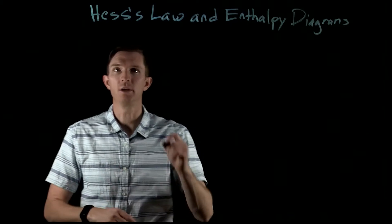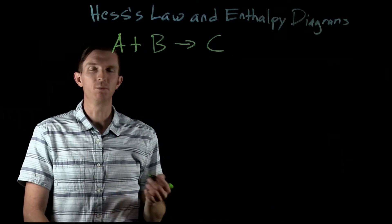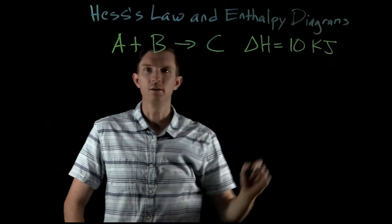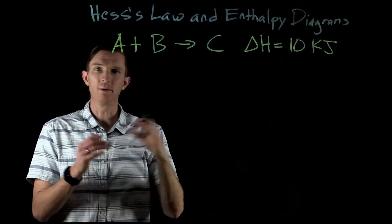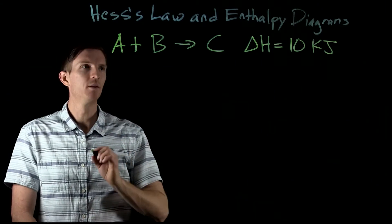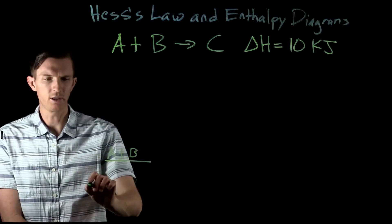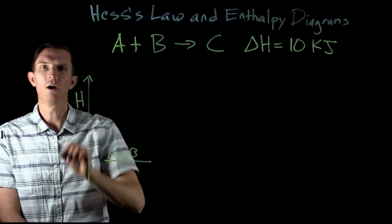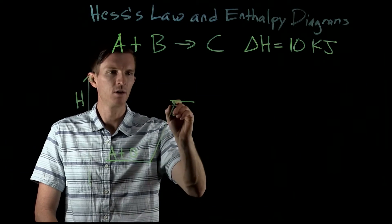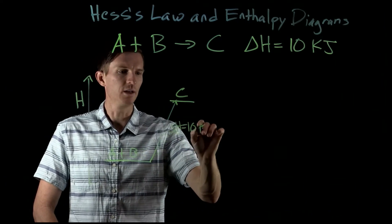Let's look at a couple examples. Say we have the reaction A plus B goes to C, and the enthalpy change for this reaction is equal to 10 kilojoules. We can diagram this — as we go up, enthalpy increases. So as we formed C, the change going up to C is equal to 10 kilojoules.